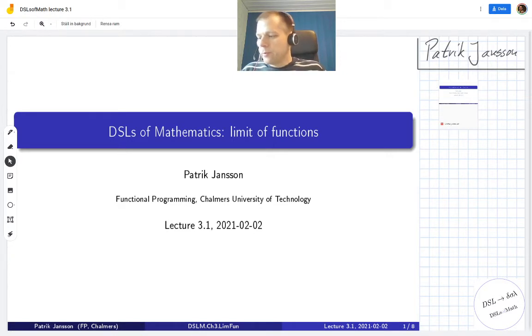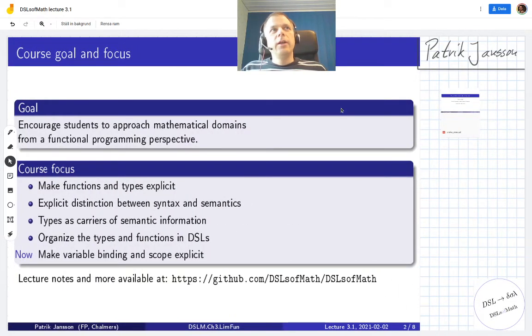I'm Patrik Jansson in the Functional Programming Group at Chalmers. This is part of the course where we try to encourage students to approach mathematical domains from a functional programming perspective. We try to make functions and types explicit and talk about distinction between syntax and semantics, often abstract syntax and then mathematical semantics. We use types as carriers of semantic information and we try to organize our types and functions in small domain specific languages.